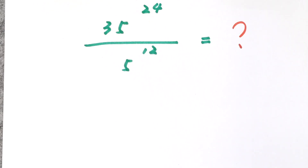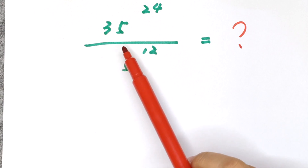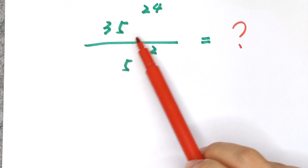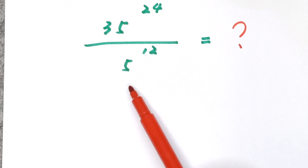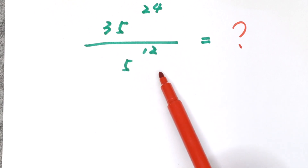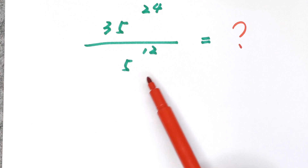Hello everyone. Welcome to Math4U. How to solve 35 to the power of 24 divided by 5 to the power of 12.